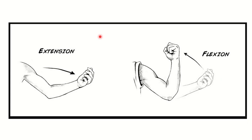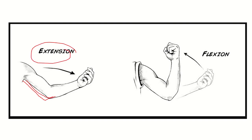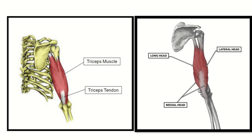In the first picture here we can see extension — when the hand goes in this direction it is extension. In the other picture we can see flexion. The muscle group which lies in the extensor aspect of the arm causes extension.